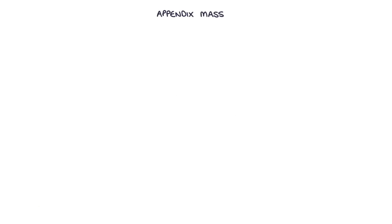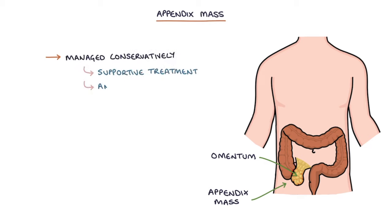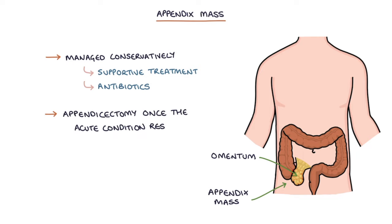Let's talk about appendix mass. An appendix mass occurs when the omentum surrounds and sticks to the inflamed appendix, forming a mass in the right iliac fossa. This is typically managed conservatively with supportive treatment and antibiotics, followed by appendicectomy once the acute condition is resolved.